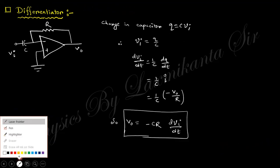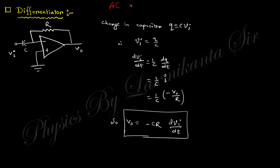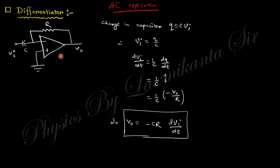For AC applications, the differentiator circuit uses a capacitor at the input. The charge on the capacitor is Q = C × Vi, so Vi = Q/C. Differentiating: dQ/dt = I, and I = −Vo/R. Therefore Vo = −R × C × (dVi/dt). The output voltage is the derivative of the input voltage — that's why this circuit is called the differentiator.